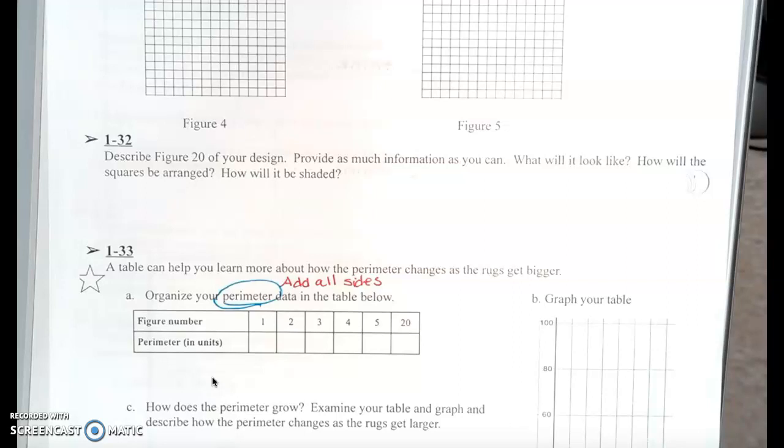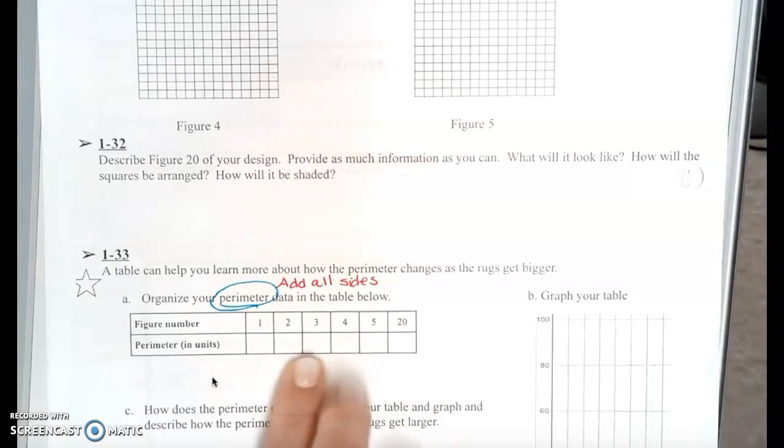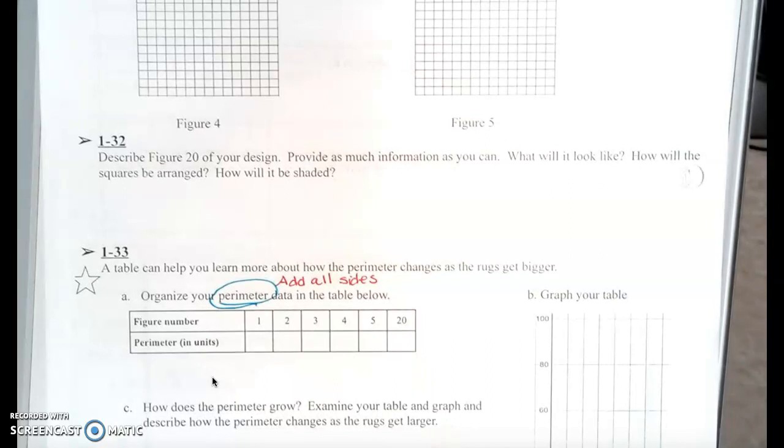Then question 33 says, a table can help you learn more about how the perimeters change as the rug gets bigger. Part A, you're going to organize your perimeter data in the table below. So for figure number 1, that's on your yellow paper, you're going to add up all the sides. You're going to count all around the outside and write down the perimeter right there. Then you're going to do the same thing for figure number 2. If somebody wants to write on it, you can use little slash marks to see which ones you've counted. You're going to do all the way up through 5, and then you're going to see if you can figure out what the perimeter would be for figure number 20.